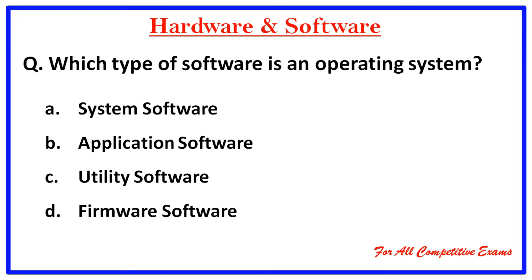Question 6: Which type of software is an operating system? Right answer is system software.